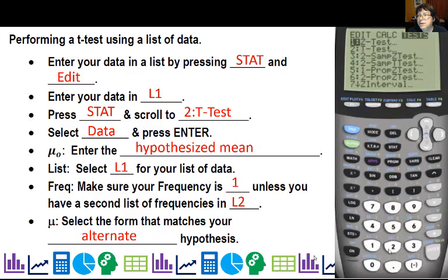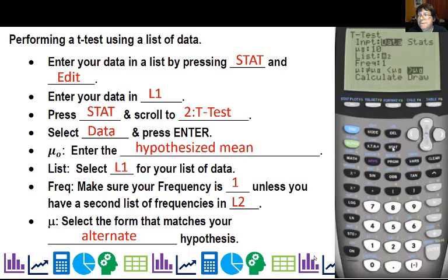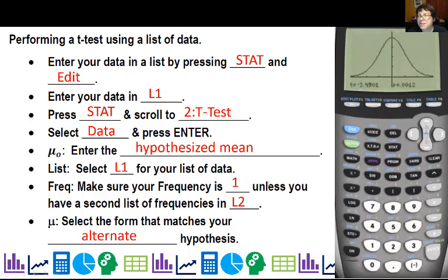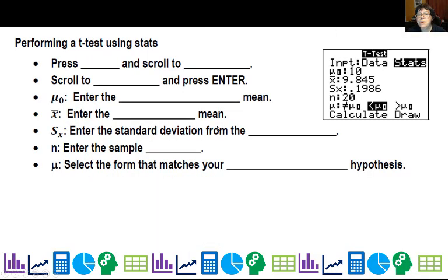So I'll show you here on the calculator. So test, and then we're going to go t-test. Notice we have data. Hypothesized mean is 10. I actually have a list of data for the coffee cups, I believe. And we're going to say that we are suspicious that it's less than, I believe. And then calculate, or you can hit draw actually, and it will show you. There is your t-test statistic, and there is your p-value. So there you go. And the reason you don't see very much shaded, it's way off over here, and there's very little to shade.